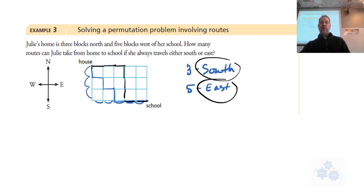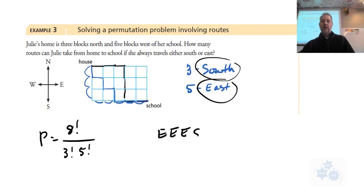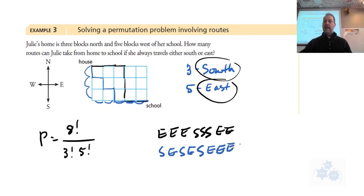She has to travel eight blocks in total — three south and five east. The number of permutations is eight factorial divided by three factorial times five factorial, treating the repeated directions as repeated objects. You can see this with two routes: one going east, east, east, south, south, south, east, east; another going south, east, south, east, south, east, east, east.